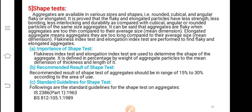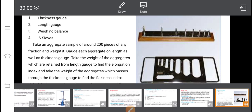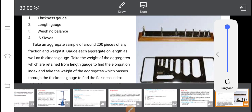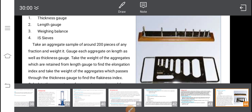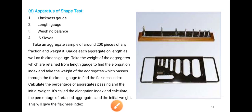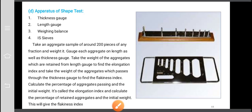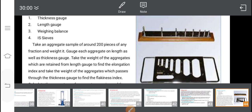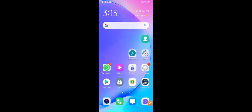We will continue in the next class, we will stop here. These are the instruments used for shape test. Length gauge, this is. This is thickness gauge. In detail, from the beginning, we will see in the next class. Thank you. Go through once and come for the next class. We will stop here.